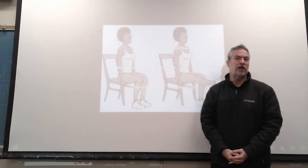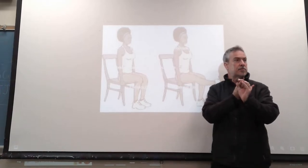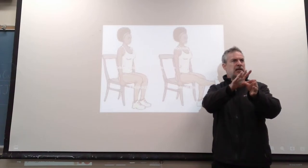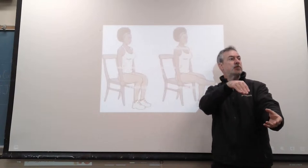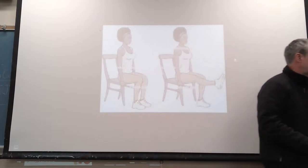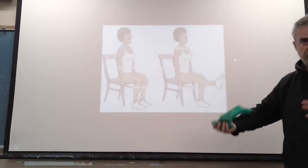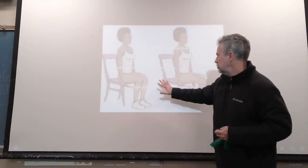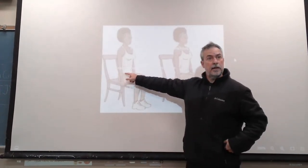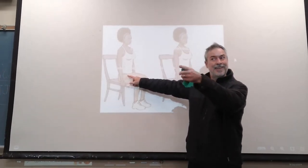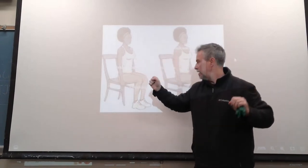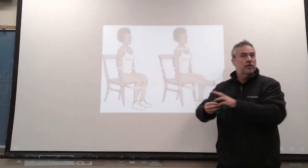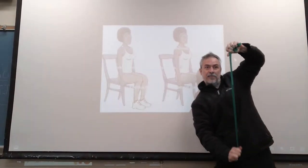In our class we ask who are the quads: three vastus muscles — lateralis, intermedius, medialis — plus the rectus femoris, which crosses both the hip and the knee. That's where length-tension comes in: longer is stronger because of the stretchy components. Because the hip is flexed in a seated position, the rectus is on slack at the hip, so the vastus muscles do a little more work. The rectus pulls less at the knee when it's slacked at the hip.